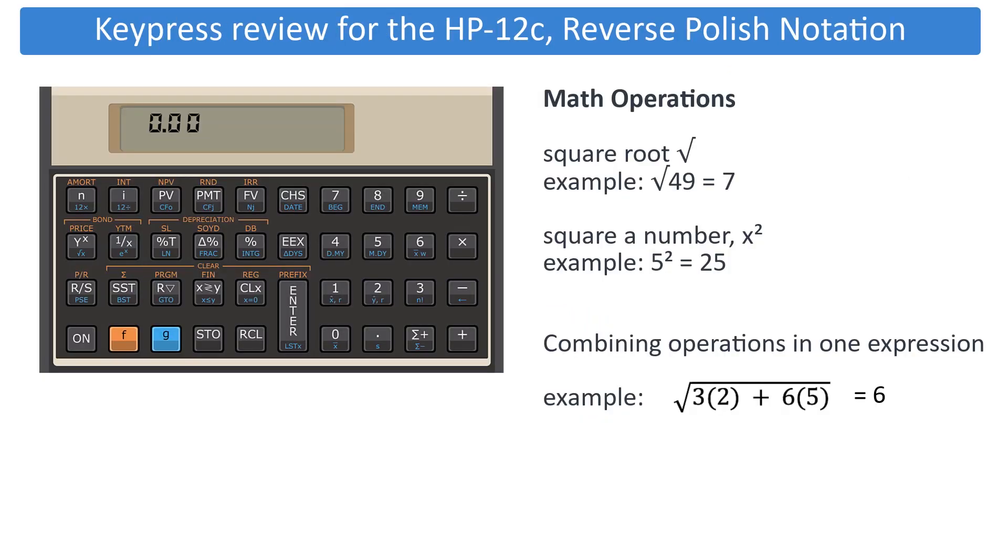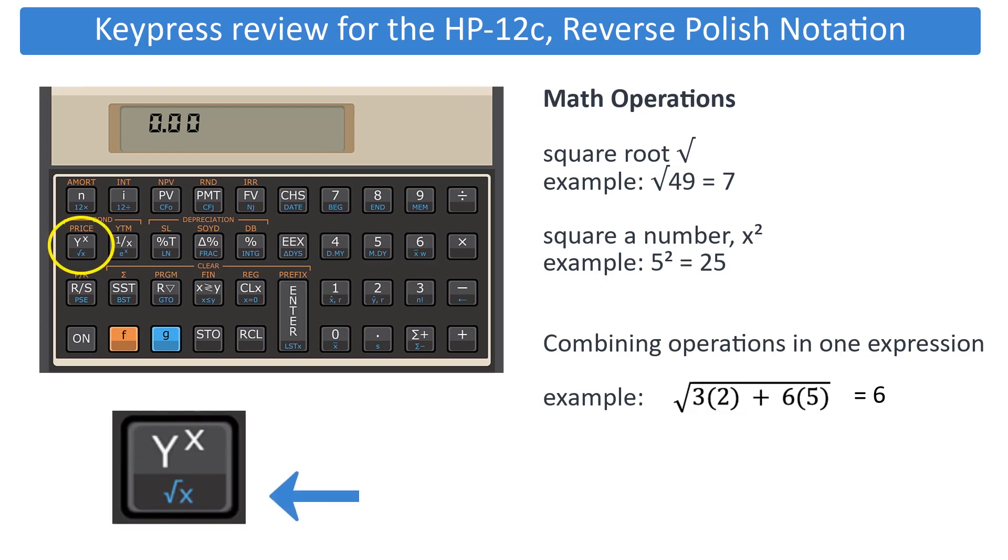A brief review on the HP-12C's reverse-polished notation to perform the operations in these formulas. Square root is found on the key Y to the X and marked in blue, which means you will need to use the blue prefix G key to access it.